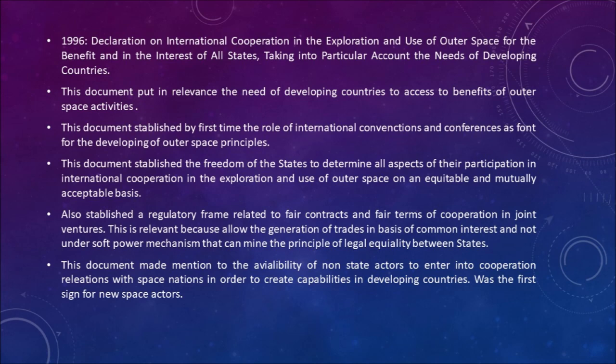Upon impact, the containment system and the physical form of the isotope shall ensure that no radioactive material is scattered into the environment, so that the impact area can be completely cleared of radioactivity by a recovery operation. This is very important because it is linked directly with human security on Earth, especially taking into account that most reentry areas are located in geographical zones corresponding to developing countries. This is very important because any kind of element that will reenter must not be dangerous for the population near to the reentry place.